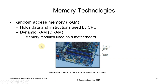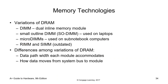Now let's talk about memory technologies. Random Access Memory (RAM) holds data and instructions used by the CPU. Usually we use dynamic RAM (DRAM) — memory modules used on the motherboard. Variations of DRAM include: DIMMs (Dual Inline Memory Module), SODIMMs (Small Outline Dual Inline Memory Module) used in laptops, micro-DIMMs used in sub-notebook computers, and RIMMs and SIMMs which are already outdated.